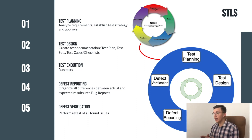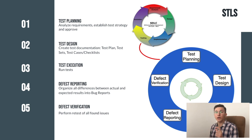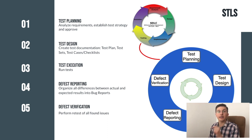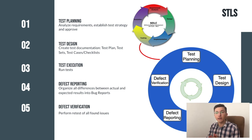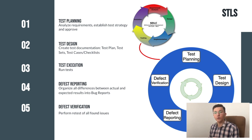Test execution is when you run the tests that you created at the test design stage. Some tests will be successfully passed — meaning the actual and expected results are the same. In other situations, the actual result won't correspond to the expected result, which means you have detected a bug.